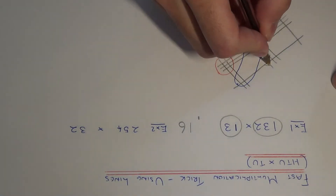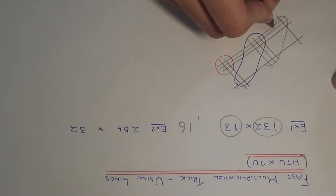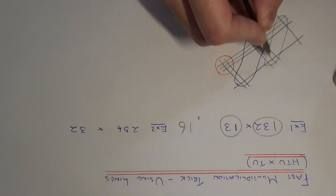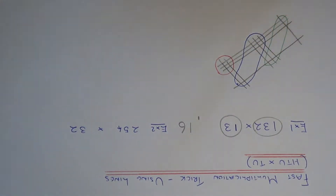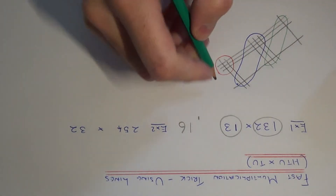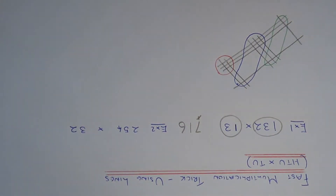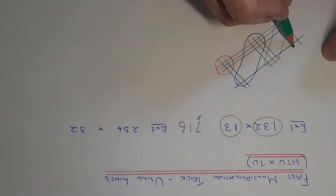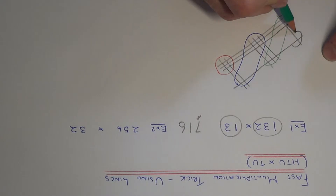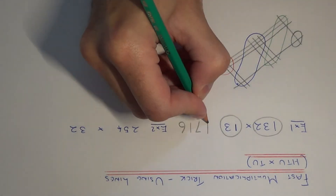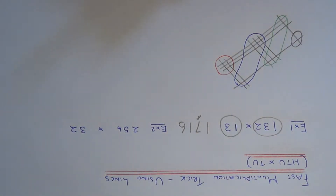We then need to count the intersections here. So we have one, two, three, four, five, six. And we need to add the one carried over, which makes seven. And finally we just need to count the intersections here — this is just one intersection. So our answer is one thousand seven hundred and sixteen.